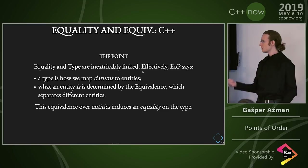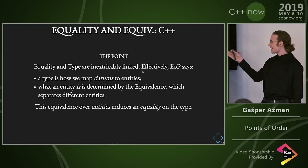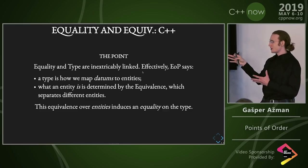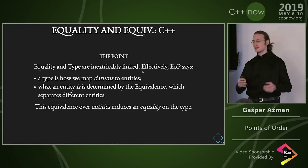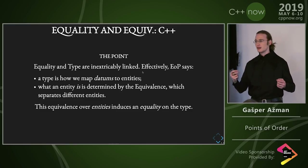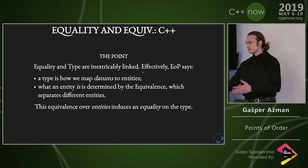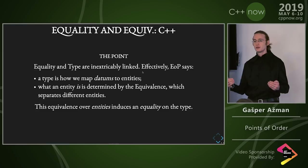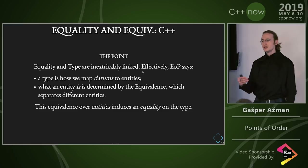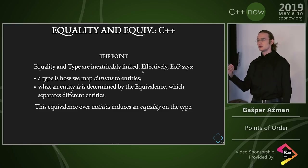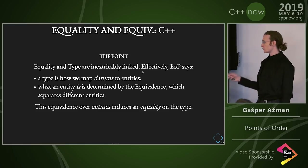A type is how we map datums to entities. And what an entity is and what it isn't — how it's separated in terms of topology from another entity — is exactly what your operator equals defines and models. This is what you need to decide as a programmer what to give your type. And it influences the name of that type.